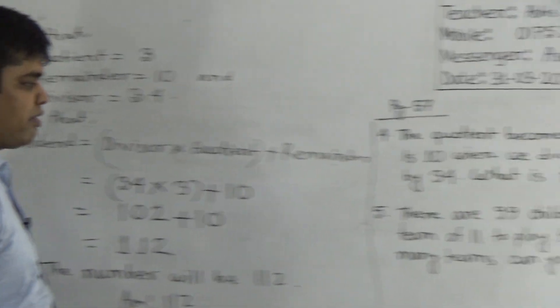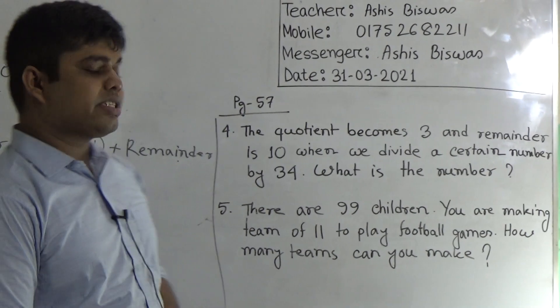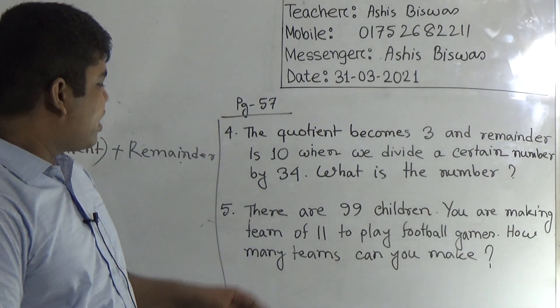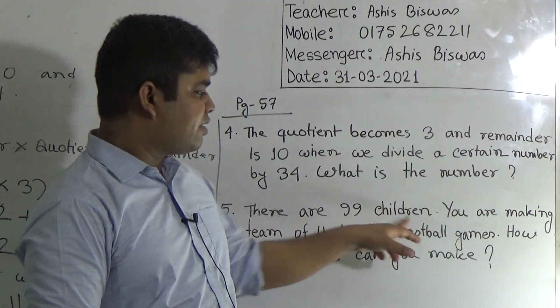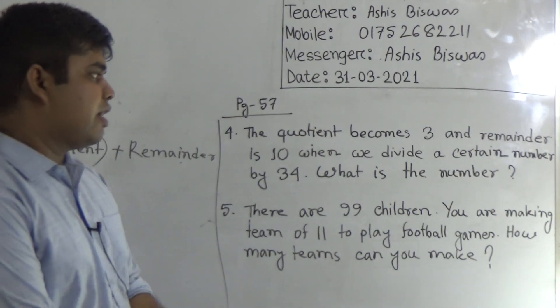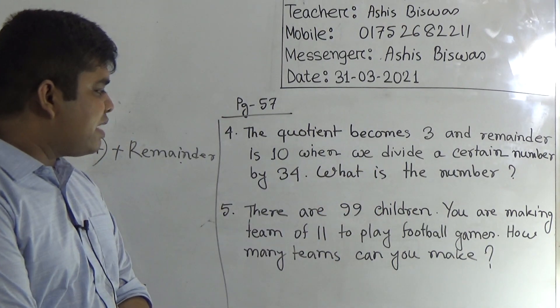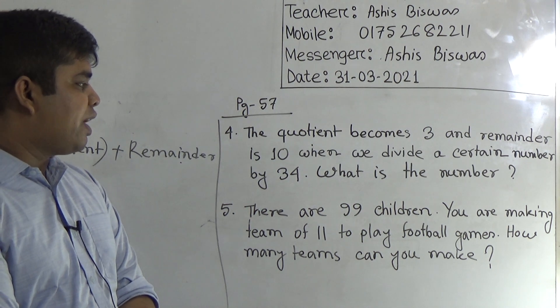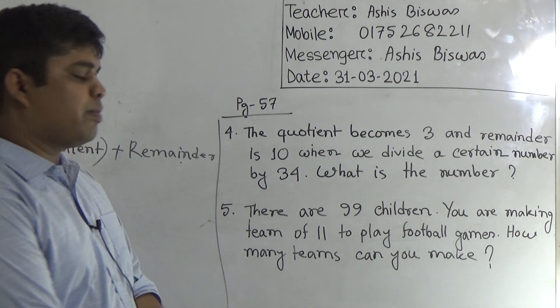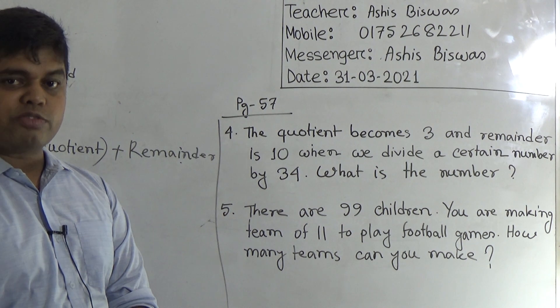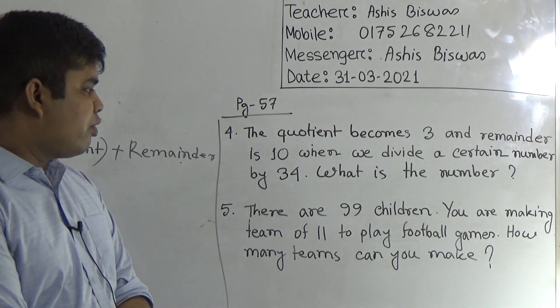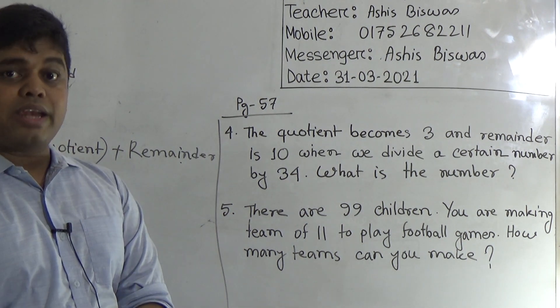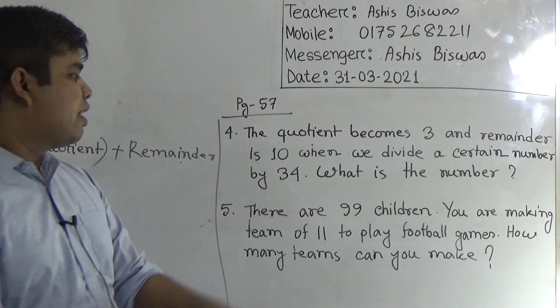Next we shall solve question number 5. In order to solve this math, at first we read the question. There are 99 children. You are making teams of 11 to play football games. That means you want to play football games. For this purpose, you make football teams, and each team contains 11 players.